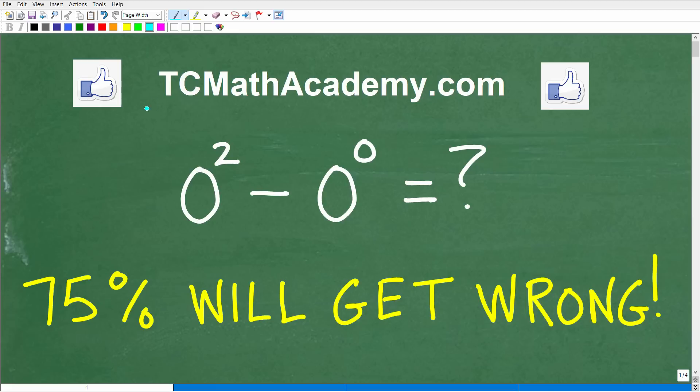Hello, this is John from TC Math Academy, and in this particular video, we're going to look at a really interesting question. And the question is, 0 squared minus 0 to the 0 power, what is this equal to?